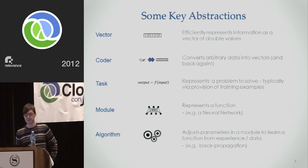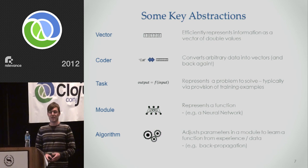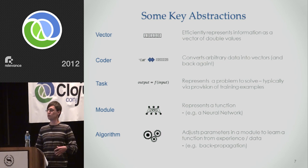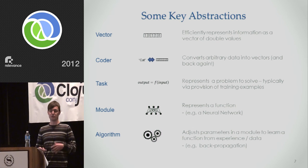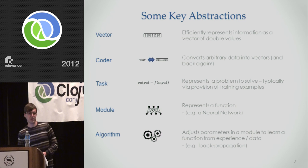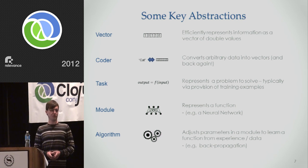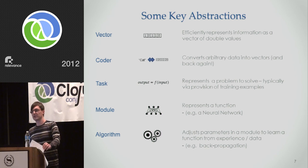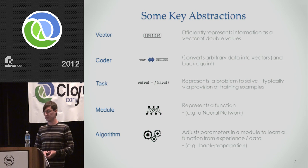So with that said, I'd like to introduce a few of these abstractions. First is the humble vector. The vector is basically an array of double values, and this is what we're going to use to represent inputs and outputs to our algorithm. Now, in the real world, your data is not going to come nicely pre-formatted in vectors, so you need a coder. This is something which will convert data to a vector and back again as needed. You also need to describe the problem that you're trying to solve. This is the task. That encapsulates all of the training data that you need to use. The module is what represents the function which is being learnt. And typically, that would be a neural network. And finally, there's an algorithm. The algorithm is what actually makes the learning work. It's what actually builds the function to solve that particular problem.